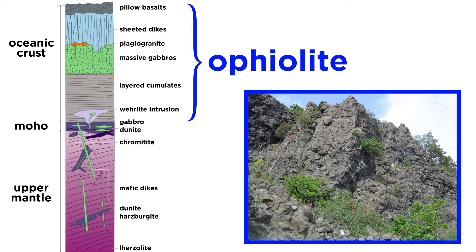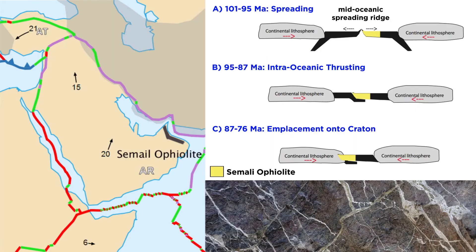The entire sequence of rocks that comprise oceanic crust, from the layered peridotite on the bottom to the sediment on top, is called an ophiolite. Ophiolite outcrops can be found in Greece and, most notably, Oman. The Somali ophiolite, which was formed along a 95-million-year-old mid-ocean ridge, is one of the largest and best-exposed ophiolites in the world.